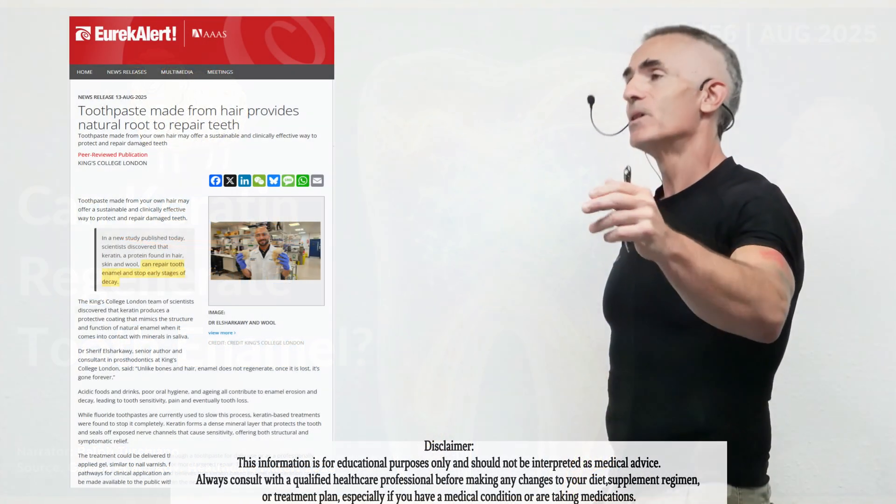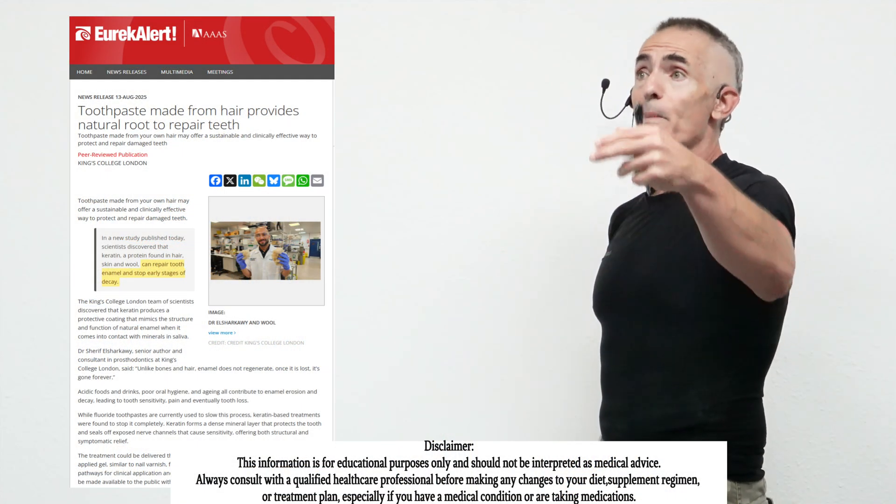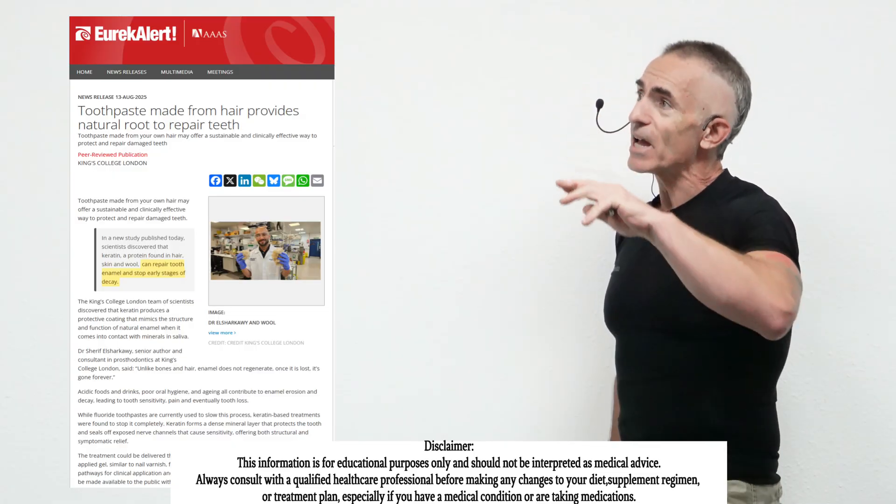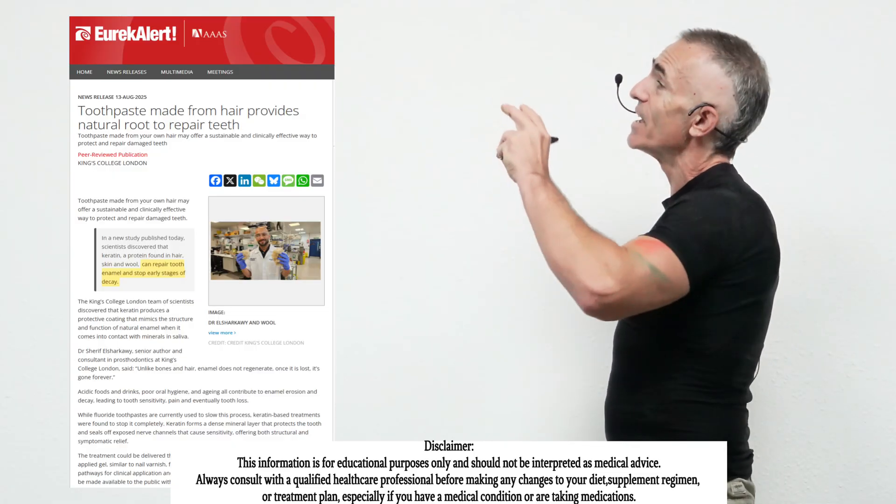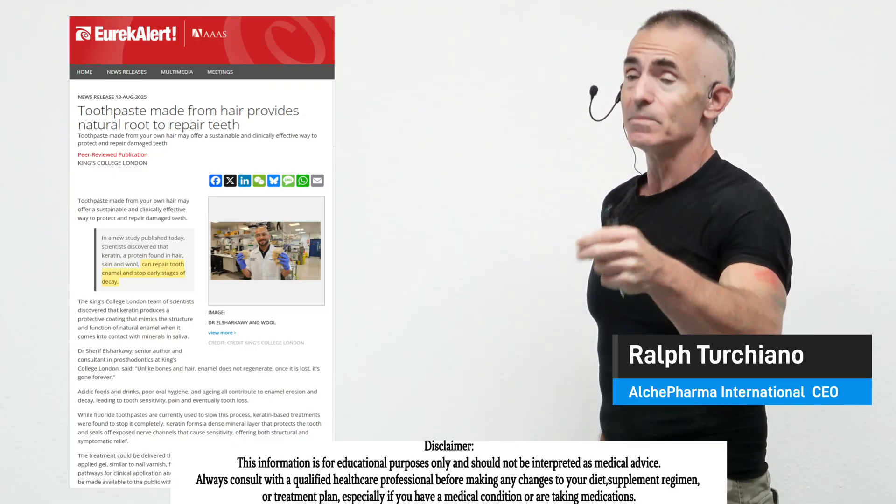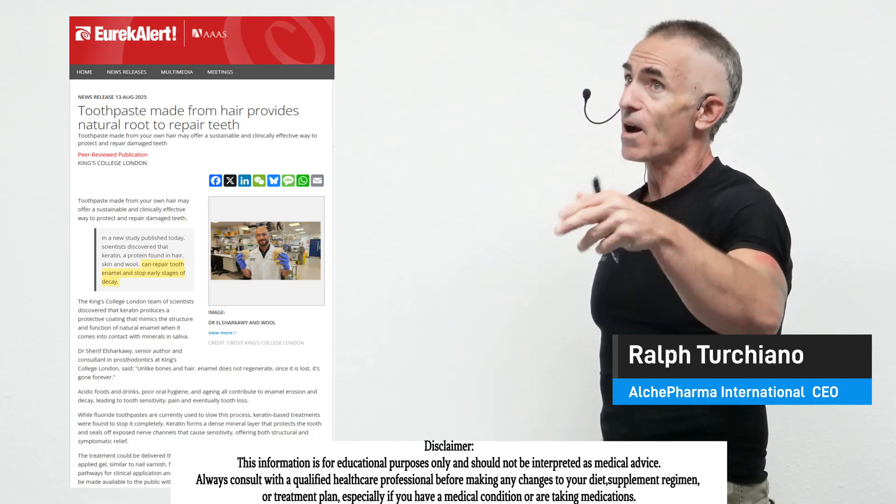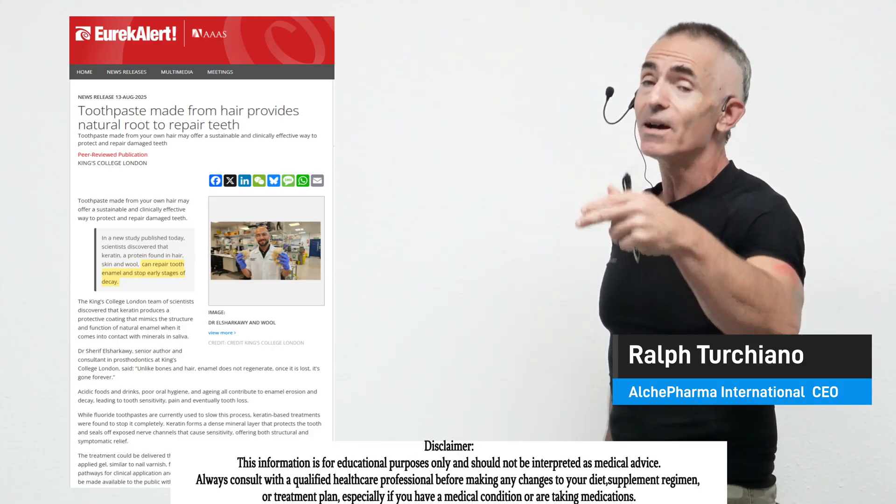Toothpaste made from hair provides natural root to help repair teeth. The couple of takeaways you have to look at in this title is what we're really looking at is keratin, which we found in skin, hair, and of course, more appealing wool.